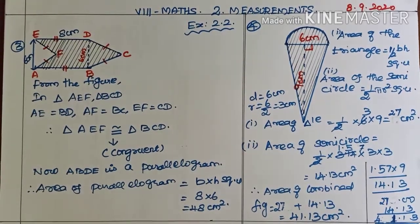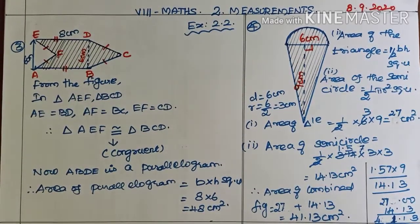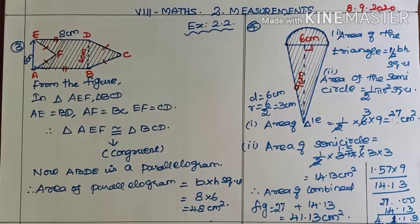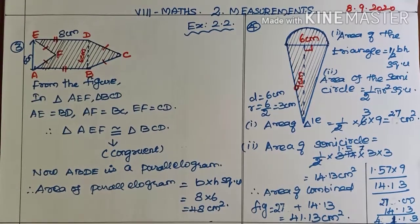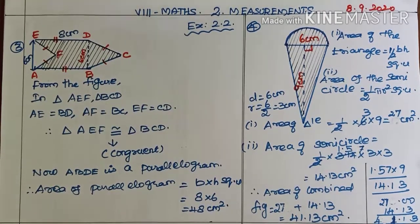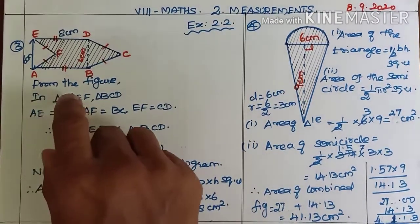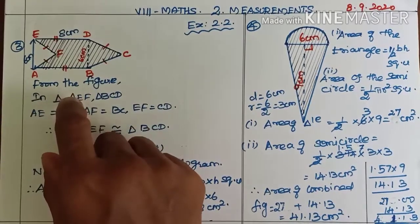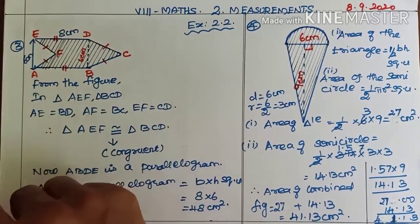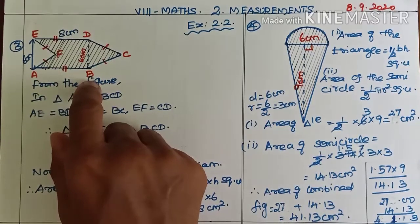Good morning students, welcome to math class. In this video we are going to see Exercise 2.2. Third sum: find the area of the combined figure which is got by joining two parallelograms.